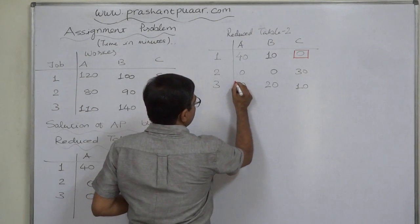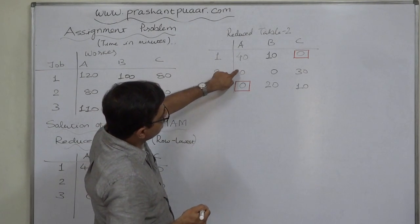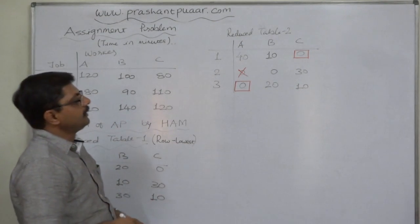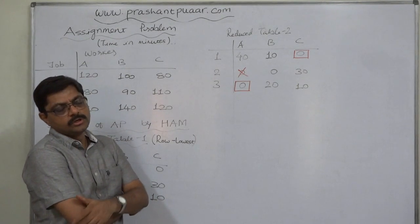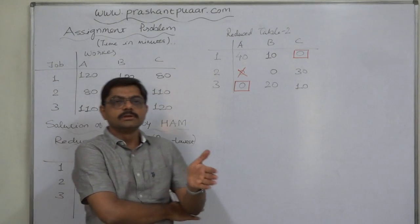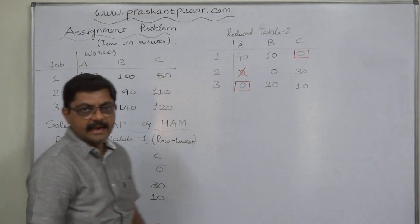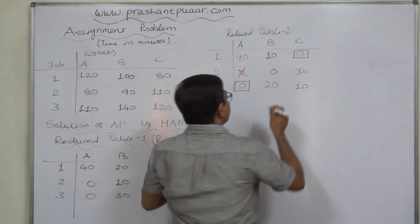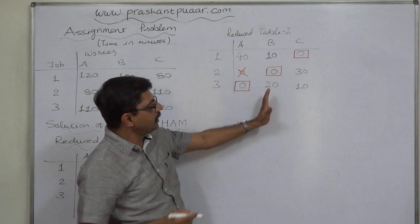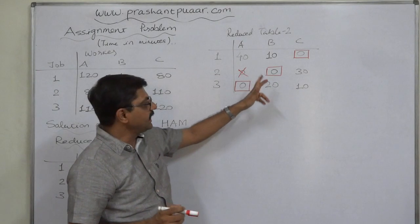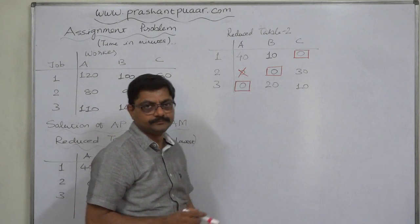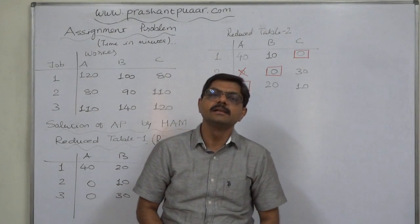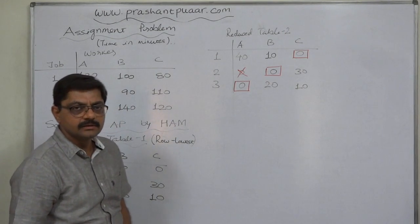The third row has a single zero, so we make the assignment there, and the assignment is automatically made to the first column. Another zero also appears in the first column, so we cancel it since two assignments cannot be made in the same column. Now no row has an original single zero remaining, so we move to step 2: find a column with originally a single zero and make the assignment. The first column is already assigned; the second column has only one zero, so we make the assignment there. When an assignment is made in a column, it is also made in a row — cancel any other zeros in that same row.